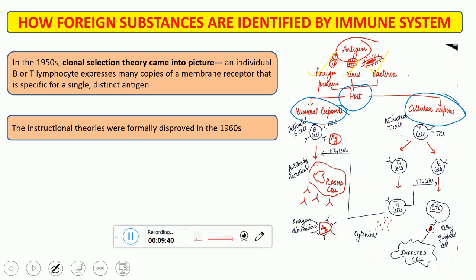In the humoral response, it activates or involves only the B cells — the B lymphocytes — while the cellular response involves the T lymphocytes. As you can see in this figure, this is a B cell having its receptor BCR — B cell receptor. As soon as it binds to an antigen, the activated B cells start releasing antibodies. The main function of a B cell is to produce antibodies, and the secondary function is to produce memory cells.